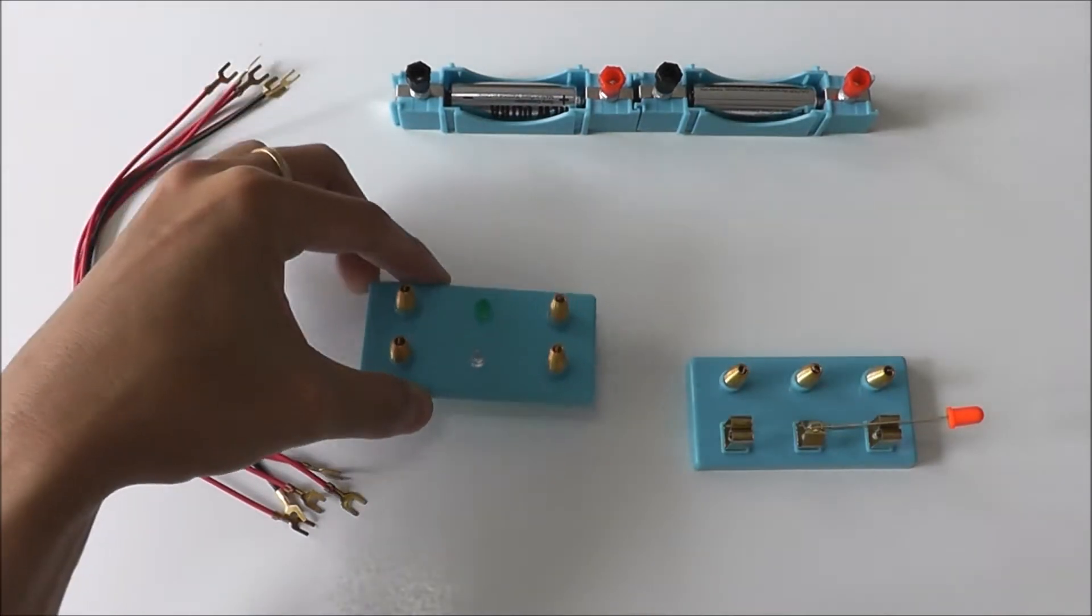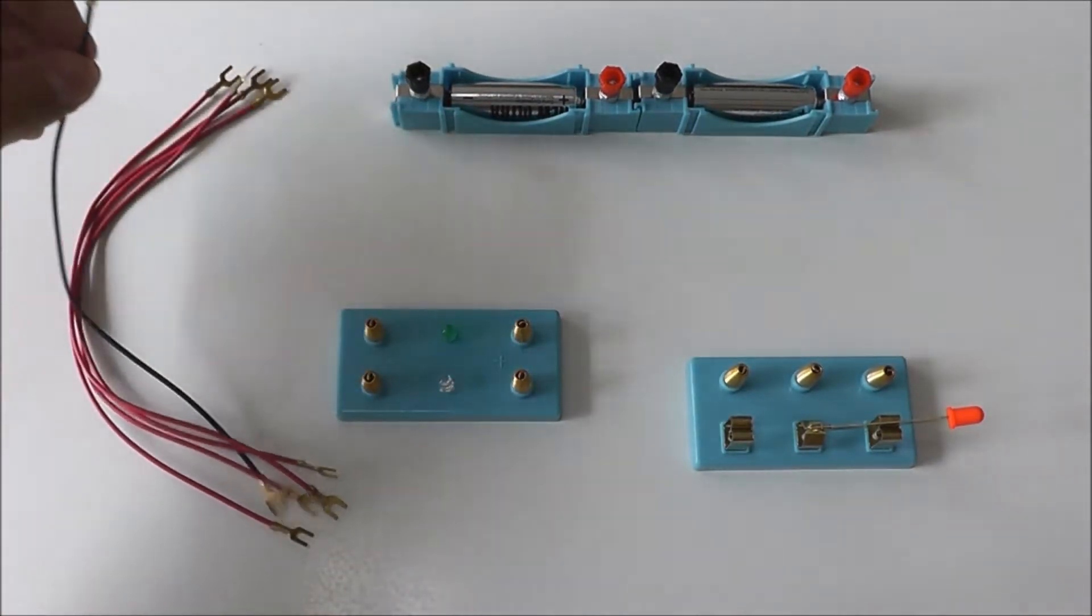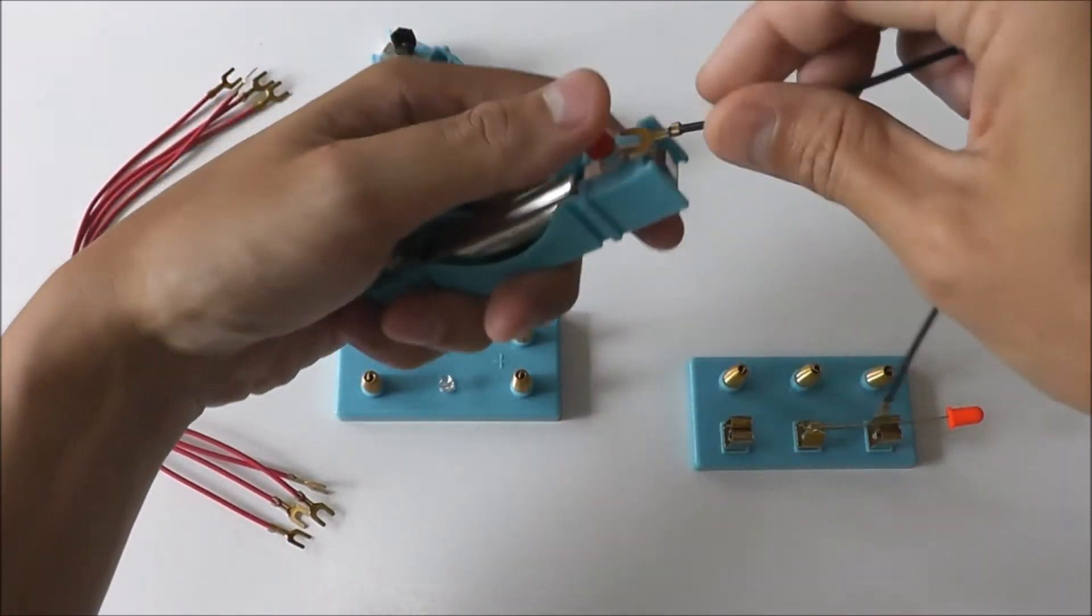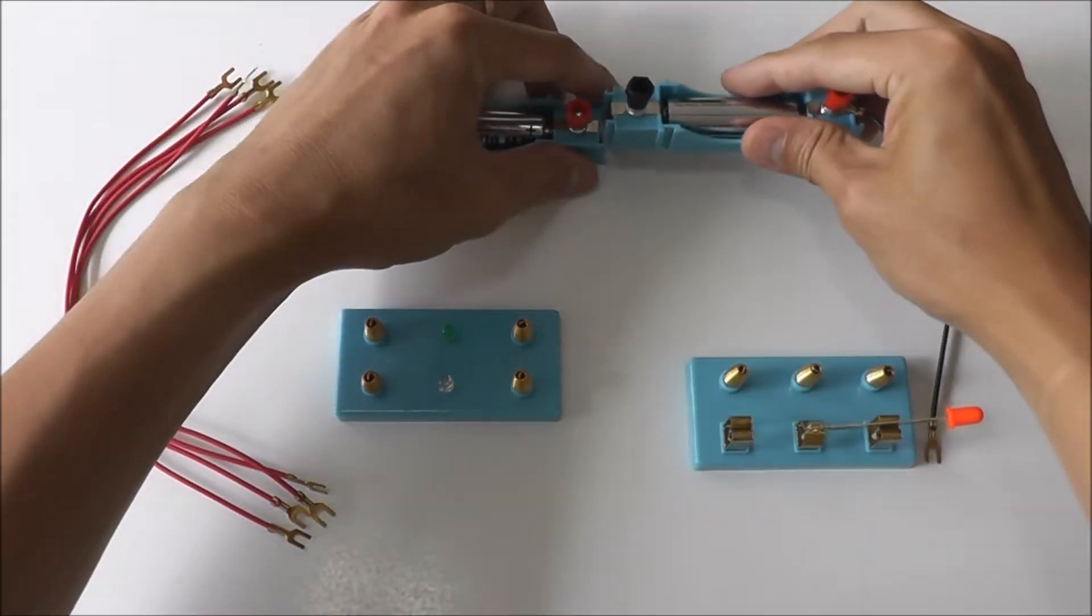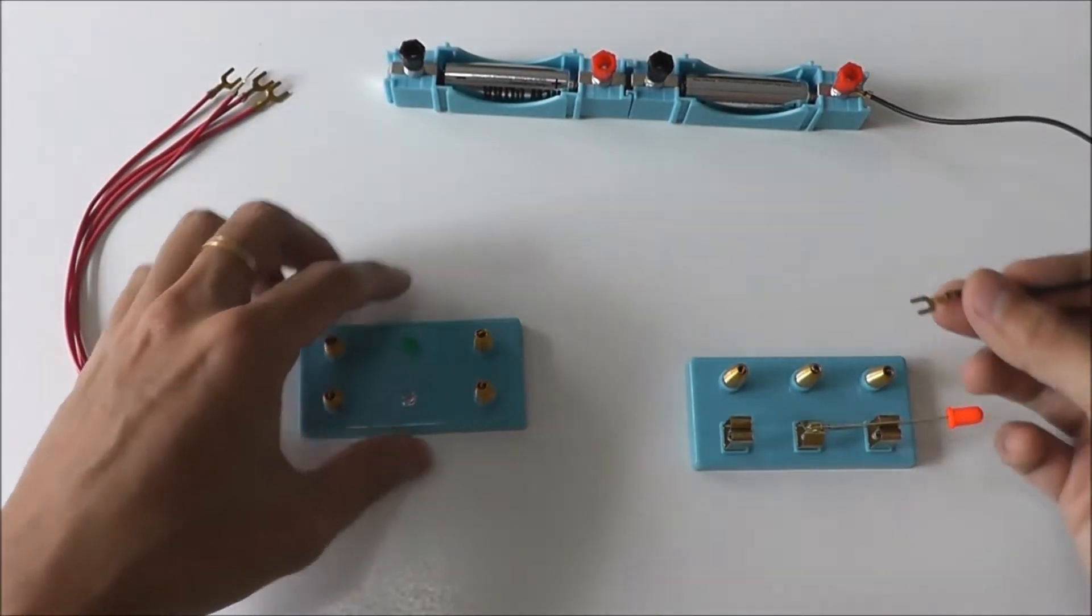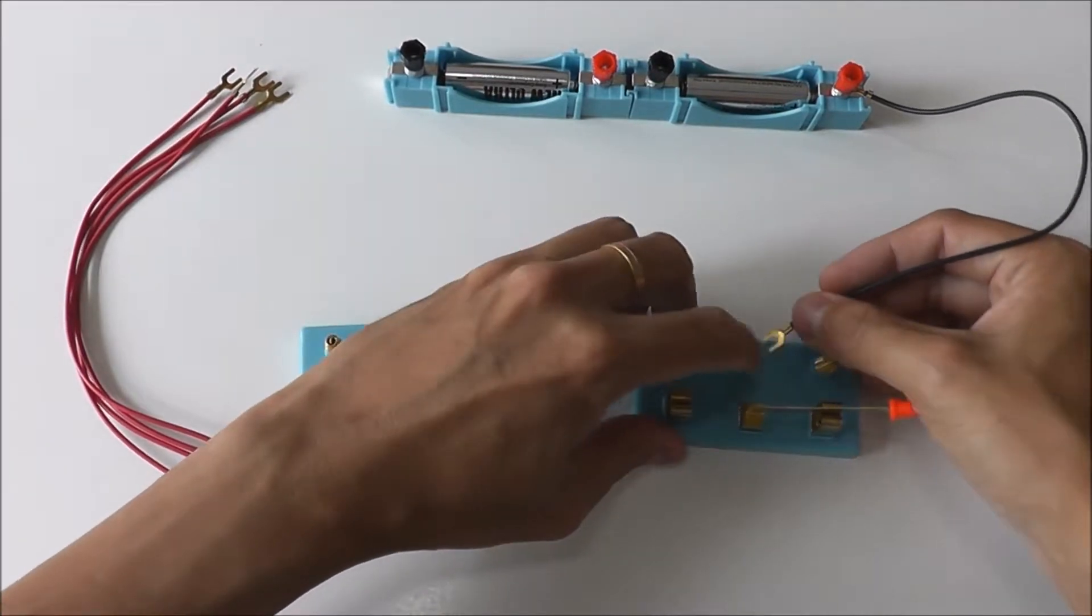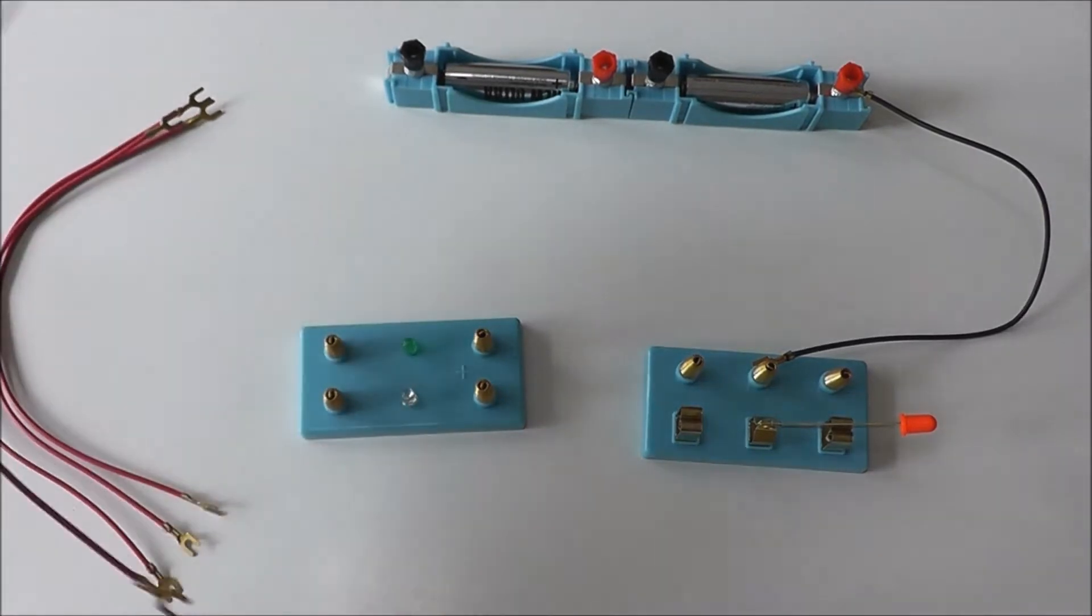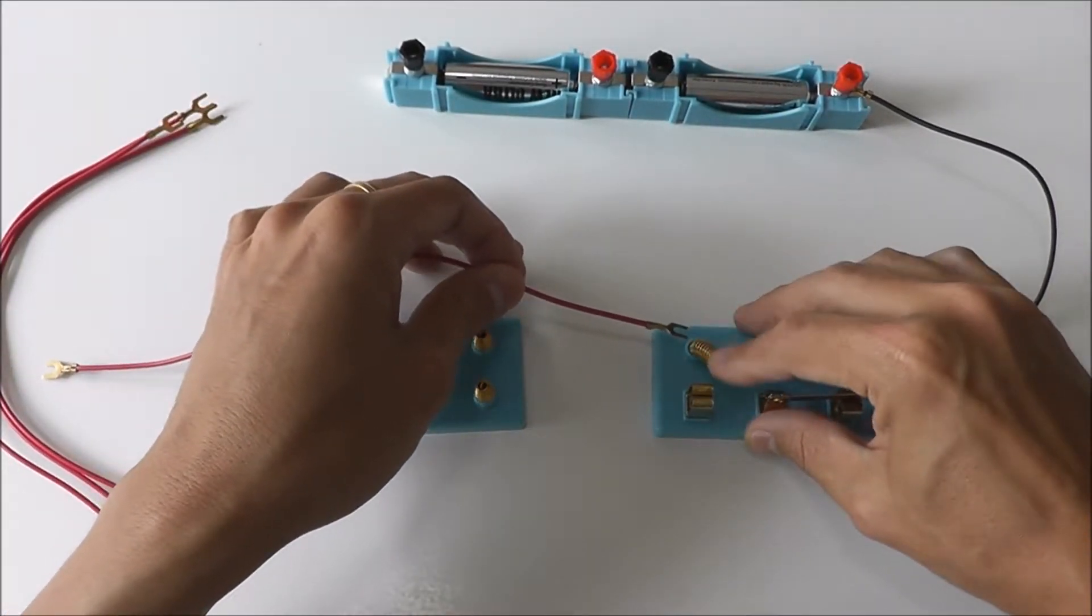Now we are ready to connect the circuit. First of all, we start with the battery. Connect it to the red knob. Then the other end will go to the middle connection point of the two-way switch. Next, I have another wire that goes to the left connection point of the two-way switch here.